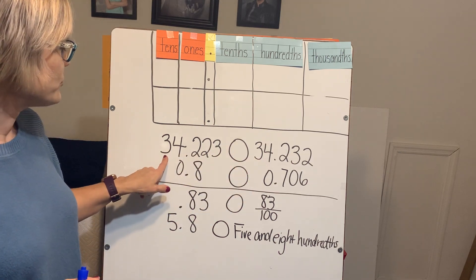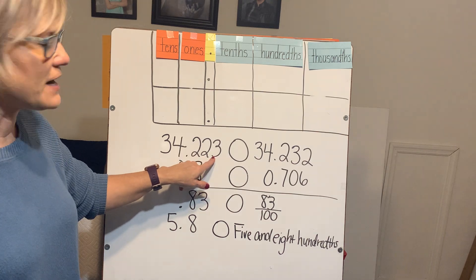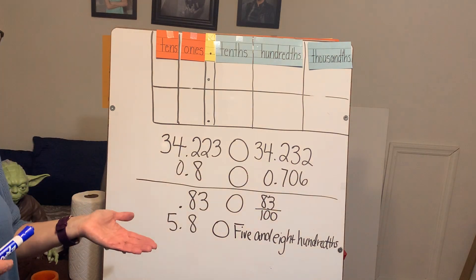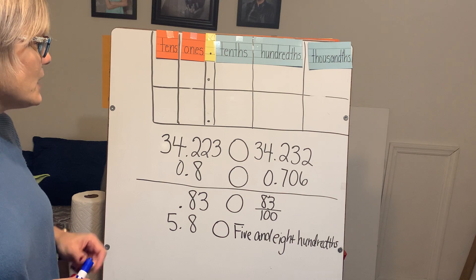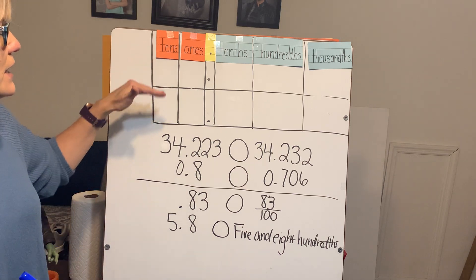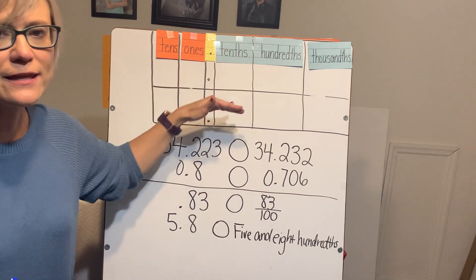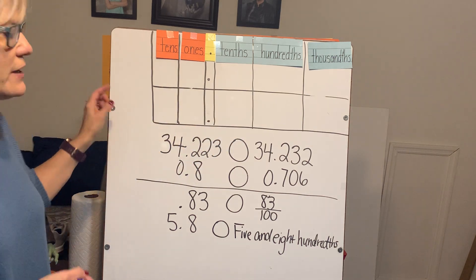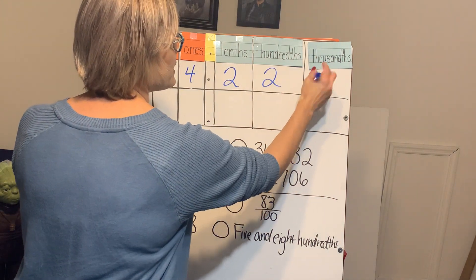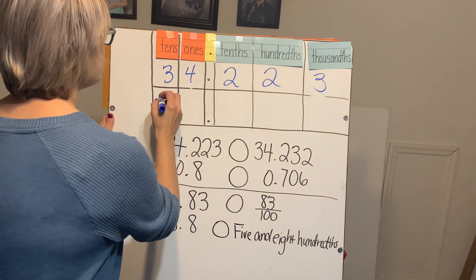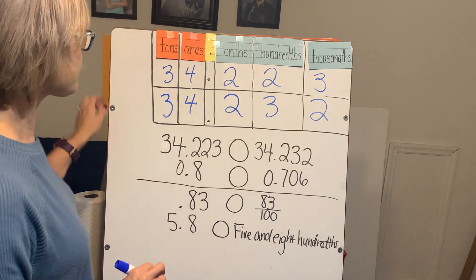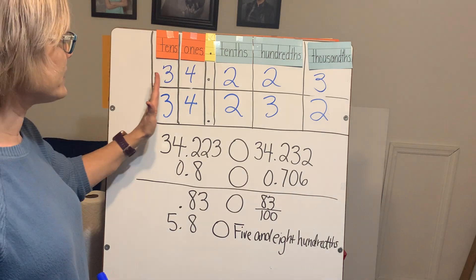We've got thirty-four and two hundred twenty-three thousandths compared to thirty-four and two hundred thirty-two thousandths. I can kind of determine which is greater by looking at them, but it's easiest to write them on a place value chart and stack them on top of each other to compare. So let's go ahead and write thirty-four and two hundred twenty-three thousandths compared to thirty-four and two hundred thirty-two thousandths.